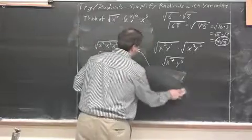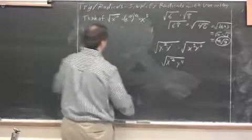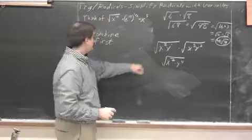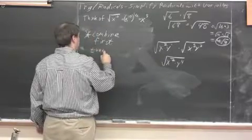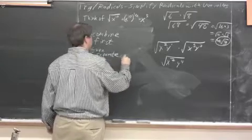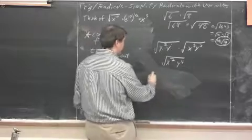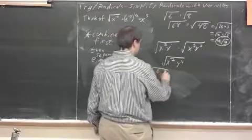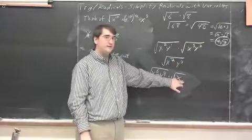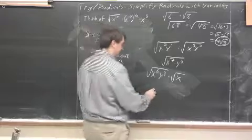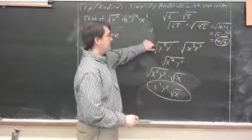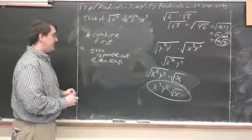So putting this together, here is the recommended approach: combine first — that's an important point. Then separate out even exponents. Take the expression and rewrite it as x to the 6, y to the 4, times x. So the final answer is x to the 3rd times y squared times the square root of x. Combine the expressions first, then separate out the even exponents.